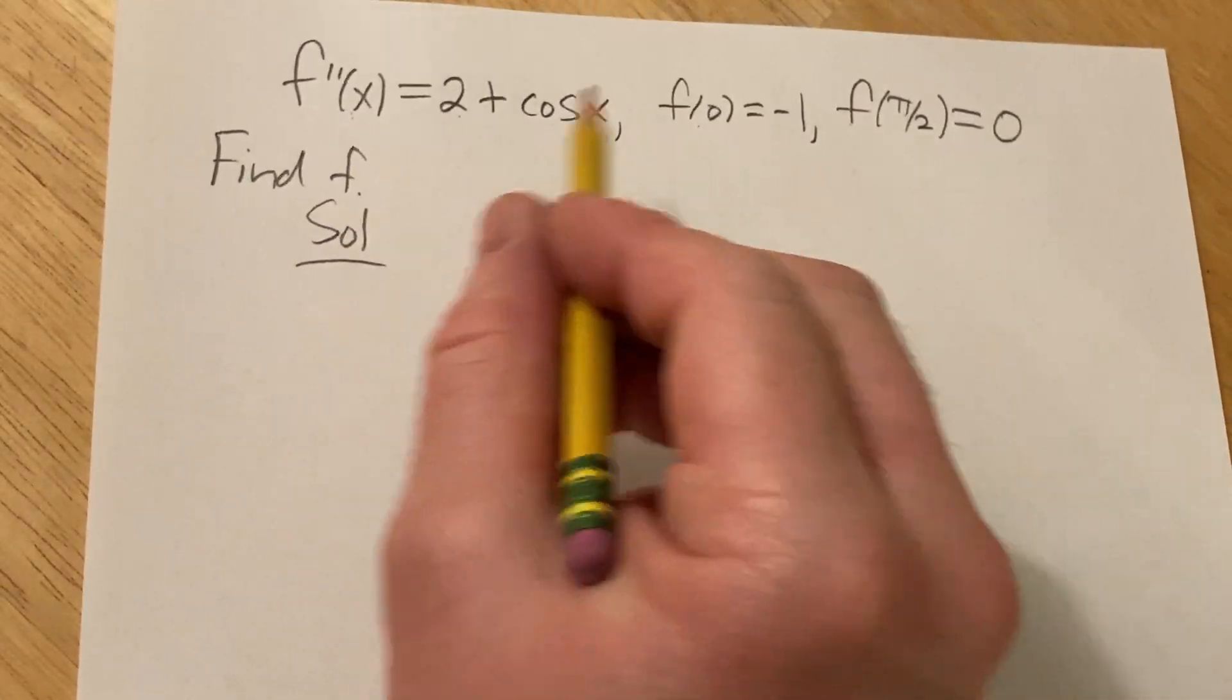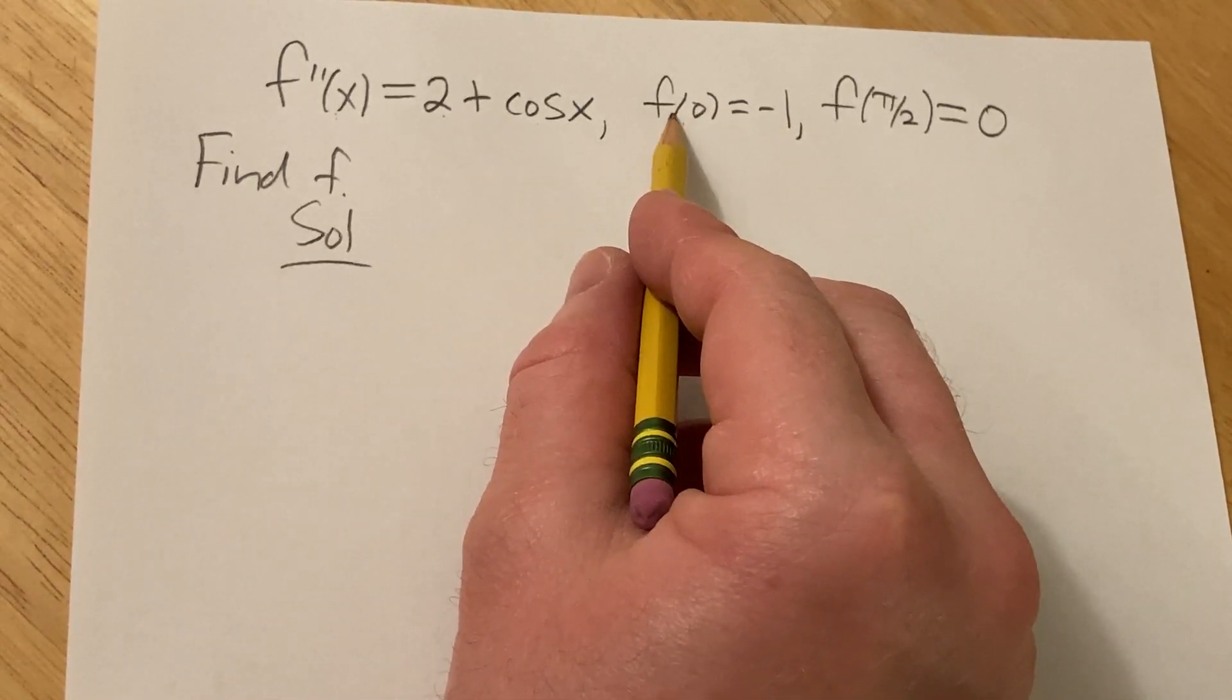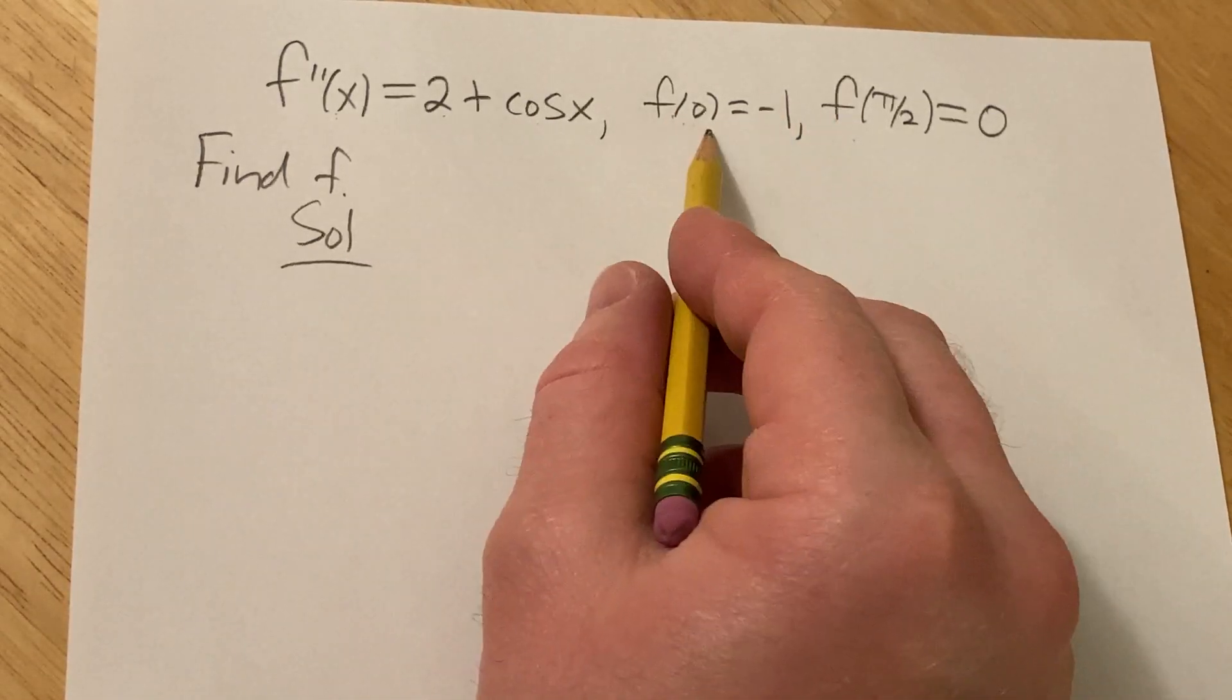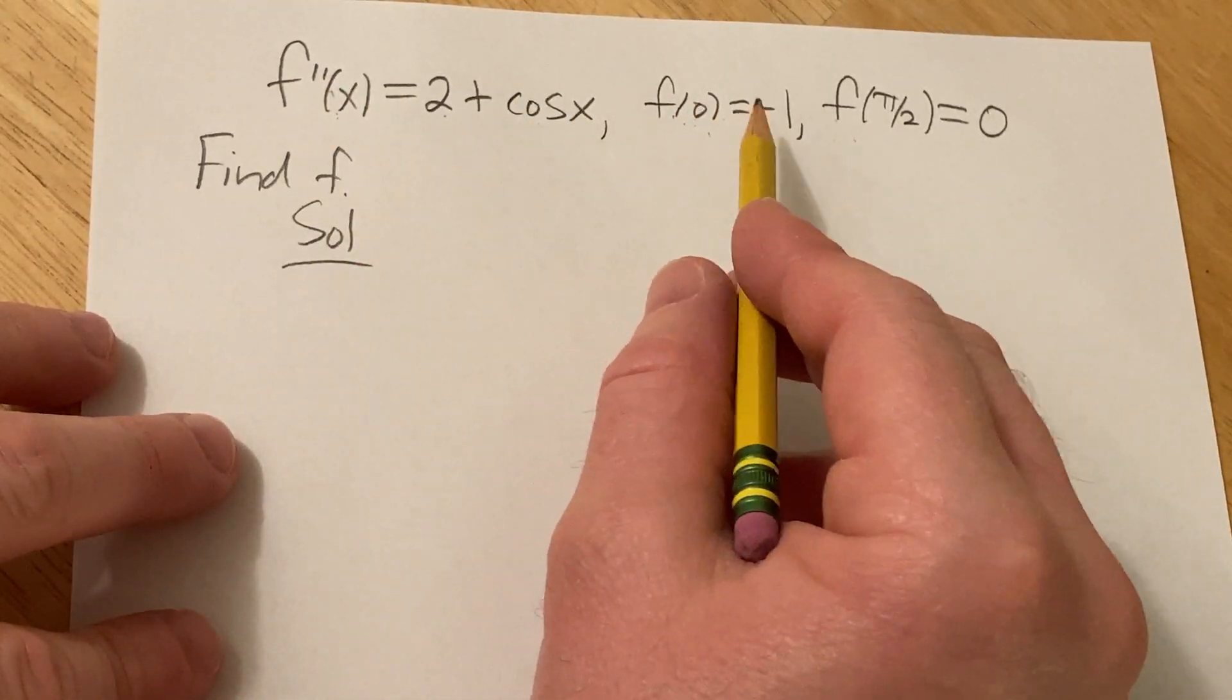So, I'm thinking we're going to have to integrate both sides of this equation to start. And you'll notice that both of these conditions are on the original function. So, we're just going to have to find f and then use the conditions to find the constants.